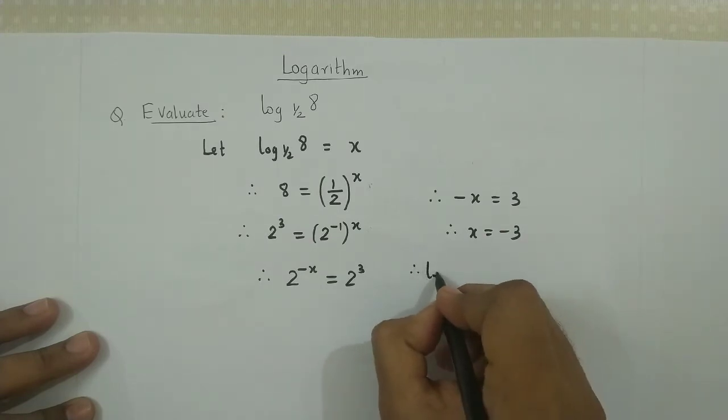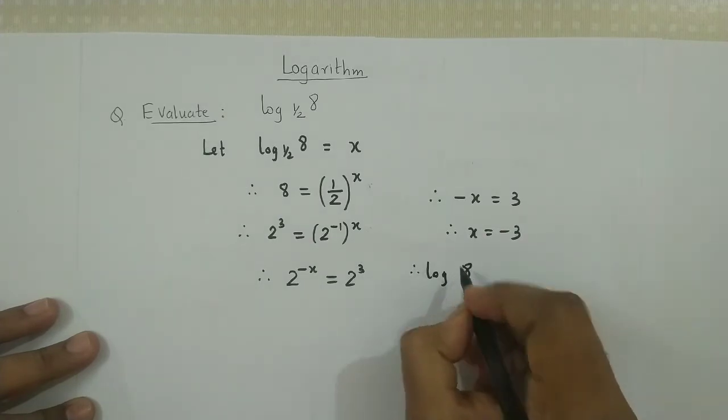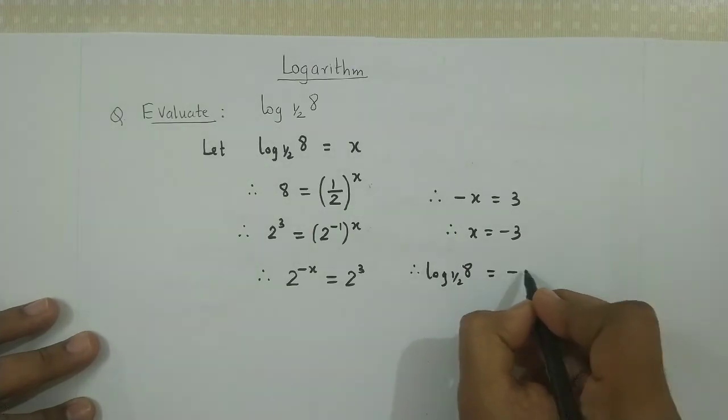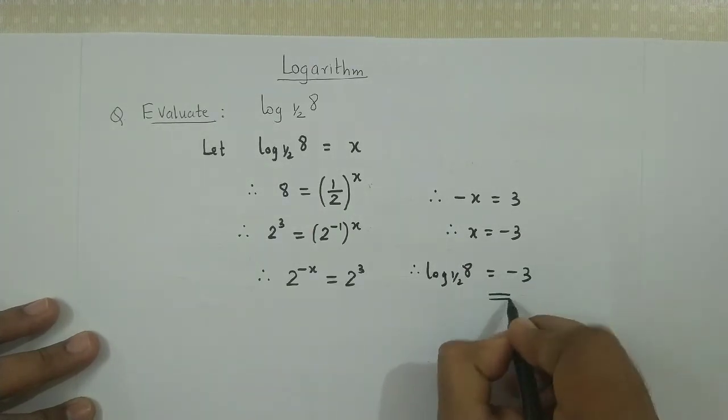Hence, we can say log 8 to the base ½ is equal to -3.